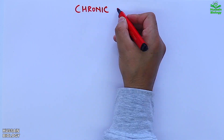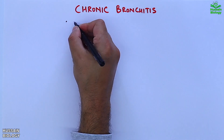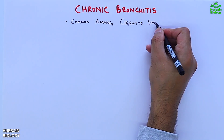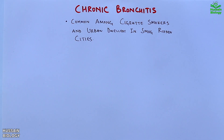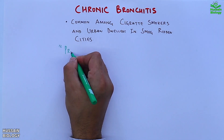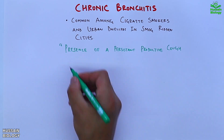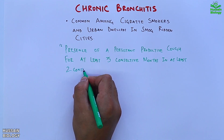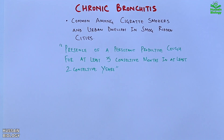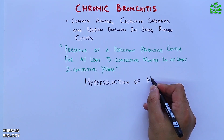Chronic bronchitis is common among heavy smokers and people in smoke-ridden urban environments. It is defined as the presence of a persistent productive cough for at least 3 consecutive months in at least 2 consecutive years. In this condition there is hypersecretion of mucus within the lungs.